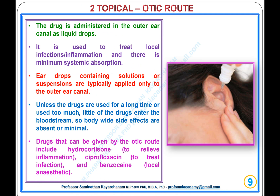Type 2, Topical: Otic Route. The drug is administered in the outer ear canal as liquid drops and is used to treat local infections and inflammation, with minimal systemic absorption. Ear drops are typically applied only to the outer ear canal; unless used for a long time or in excess, little drug enters the bloodstream, so body-wide side effects are absent or minimal.